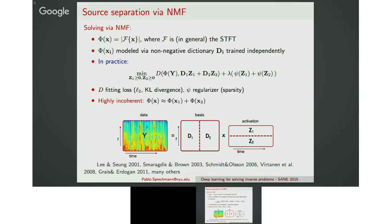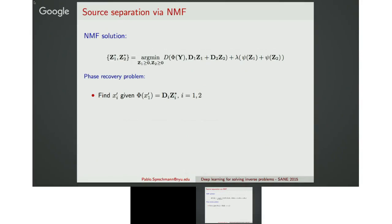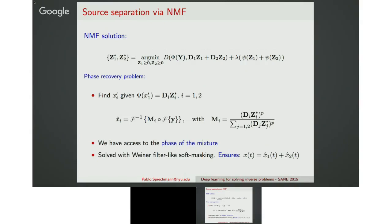The NMF approach is solved in practice by solving a cost that resembles model-based approaches, in which the transformed version of the signal is decomposed using a dictionary with two components, one for each source. We can do this because in time-frequency representations, signals are generally incoherent. After we perform the separation, we need to recover the signals via a phase recovery problem, efficiently solved using Wiener-filter-like maskings, which ensure both signals adapt to the original signal.